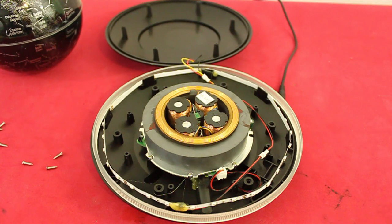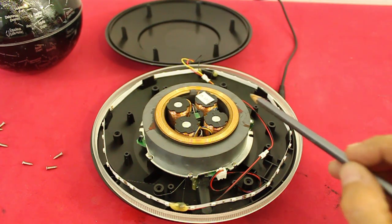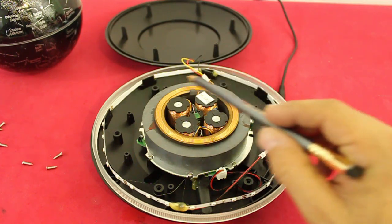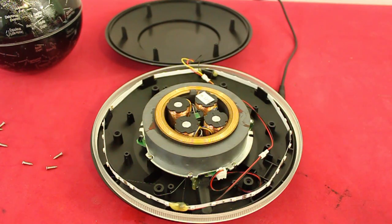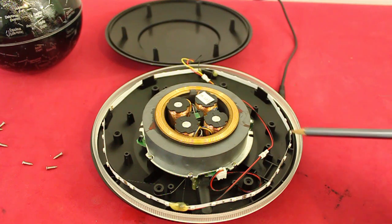Here you can see what's inside the base. There is a very large ring magnet here. We have an LED strip for the light effects of the base.